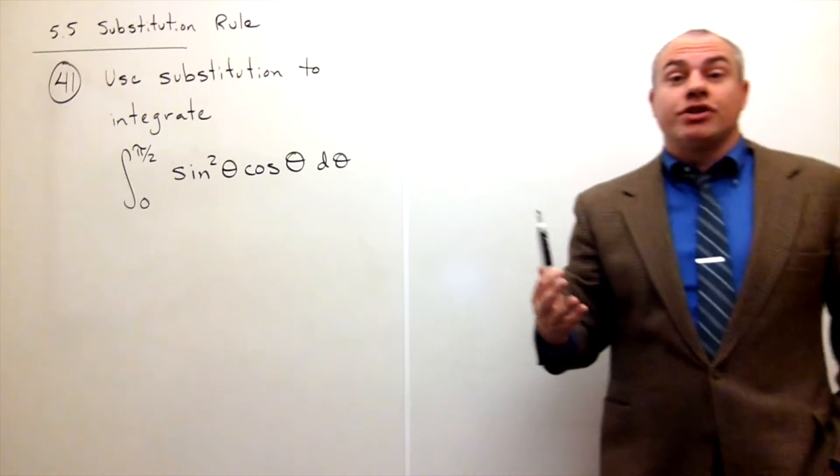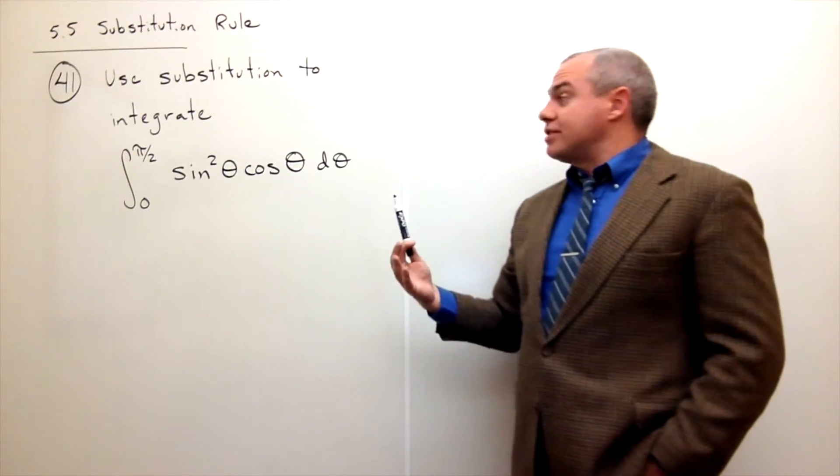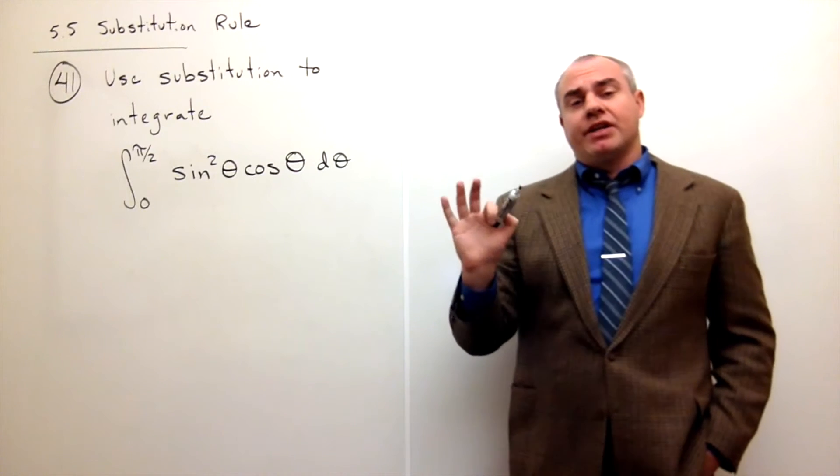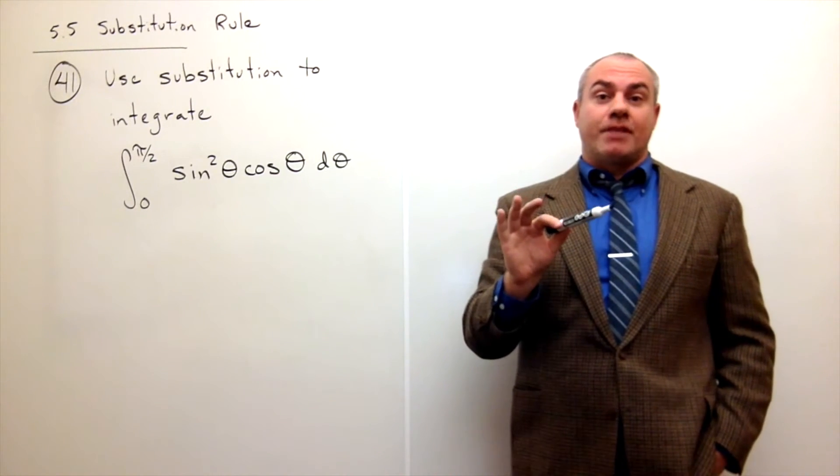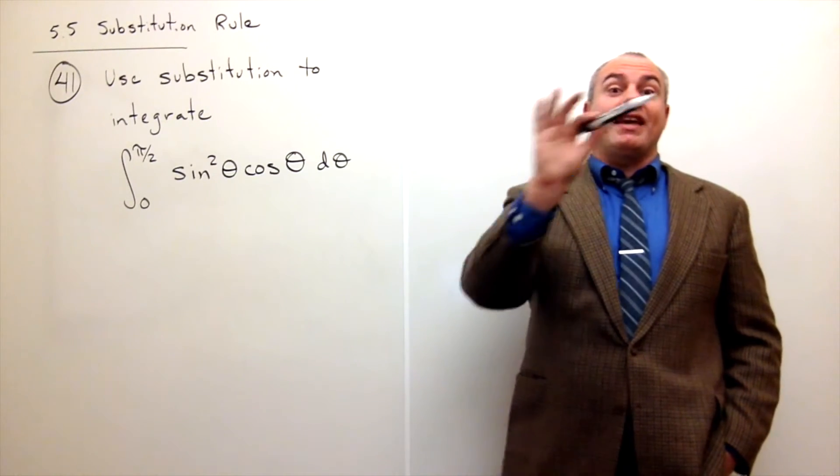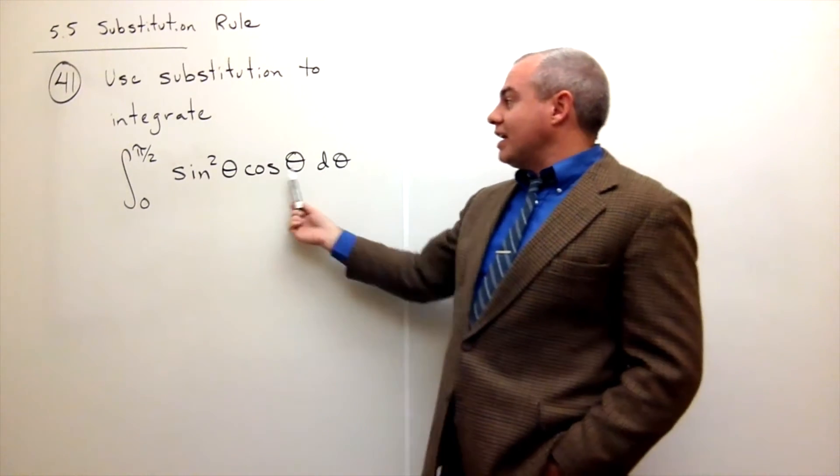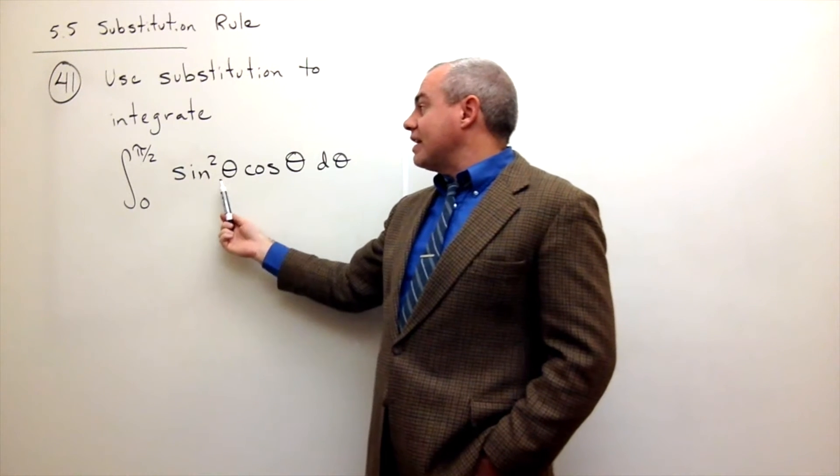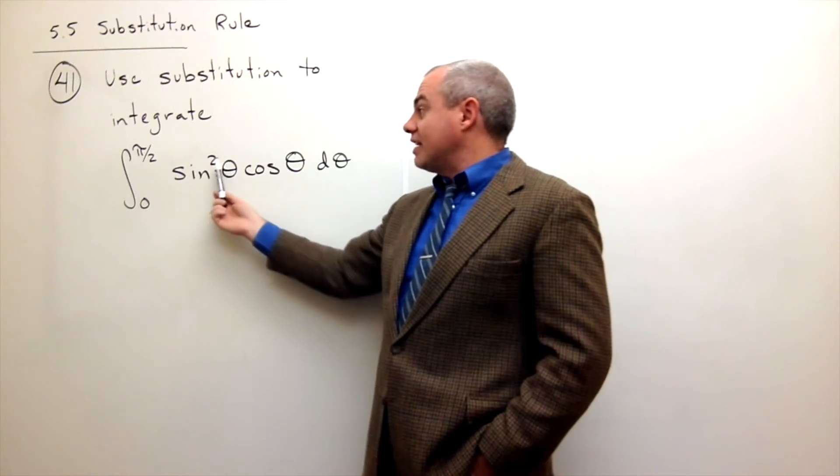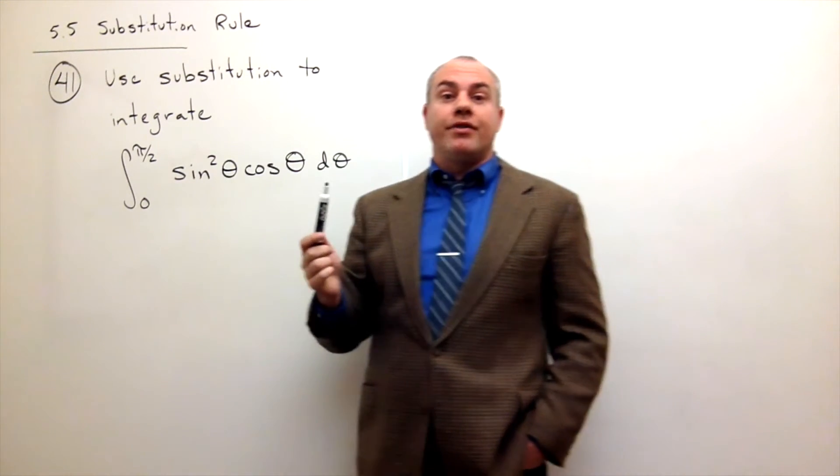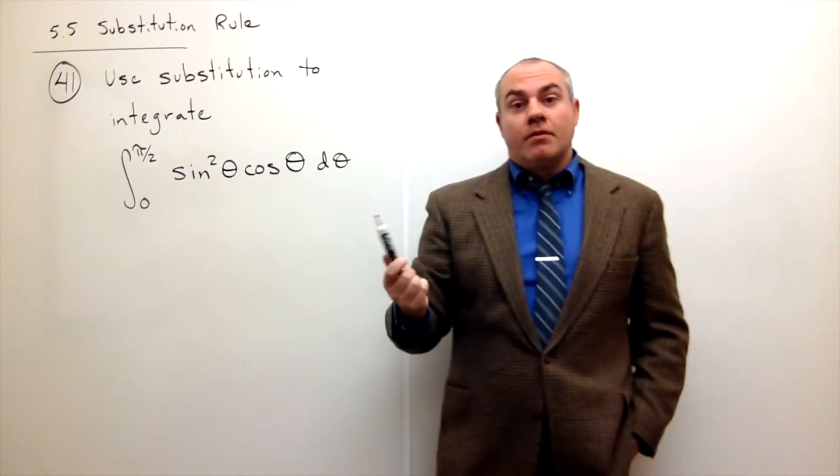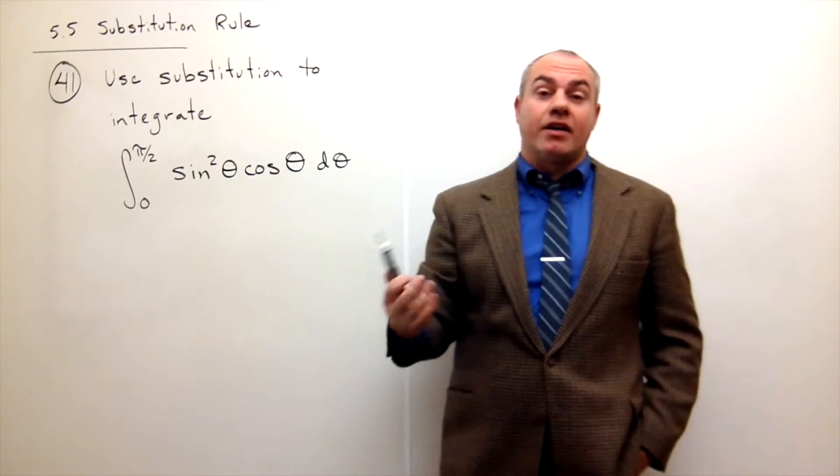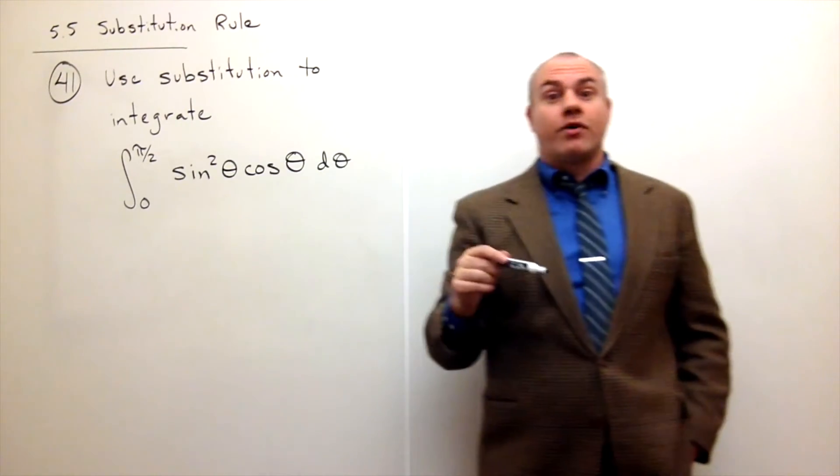So the first question you might have here is well what do we substitute for? And remember one of the tricks is typically you're going to substitute for something that is a function within a function. So cosine is not a function within a function but sine of theta is because sine of theta gets squared. So the wise choice here would be to substitute for sine of theta, don't substitute for cosine of theta.